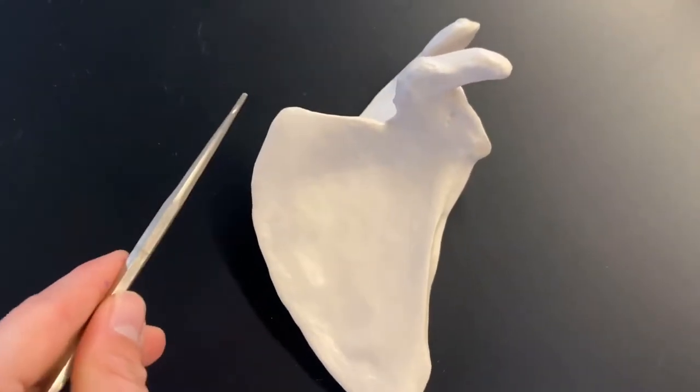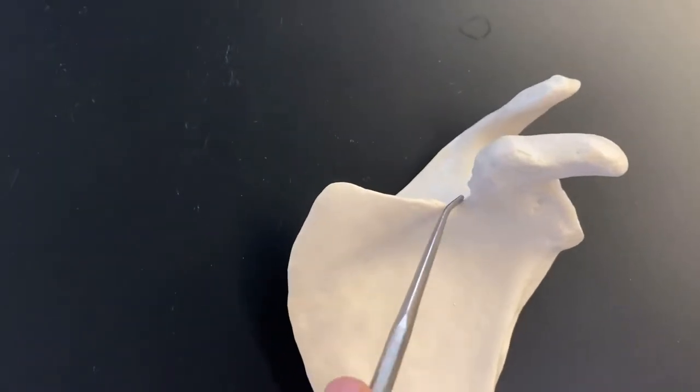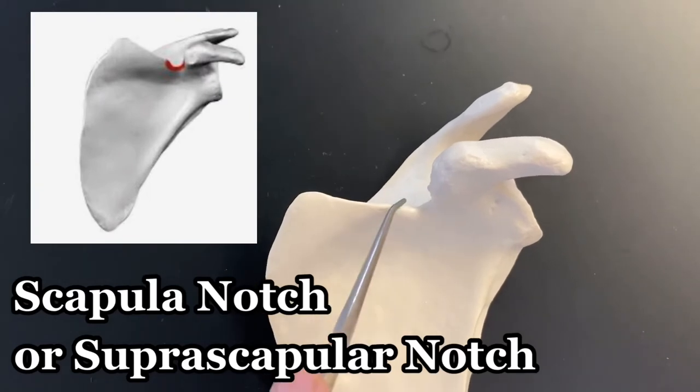And one more to mention here. If this is the superior angle, notice how it comes in and it forms this little notch. This is called your scapular notch. This little part in the scapula.